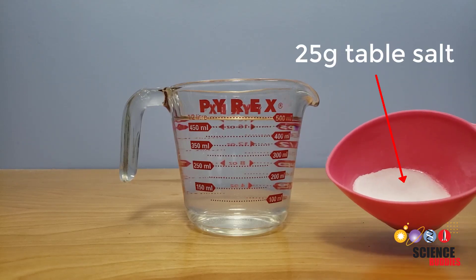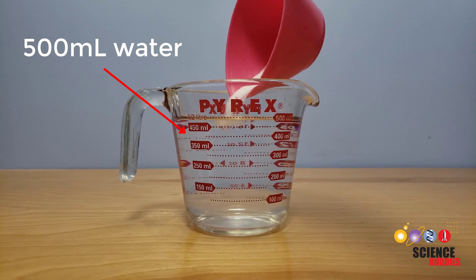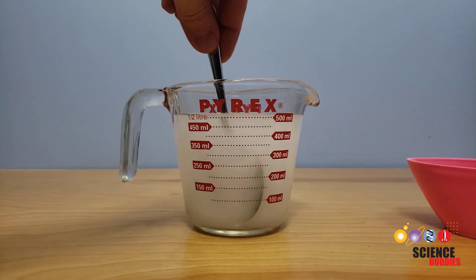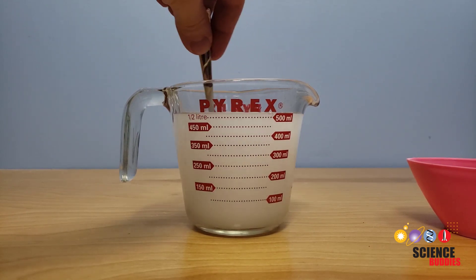Start by measuring 25 grams of table salt with a kitchen scale and add it to 500 milliliters of water. Mix thoroughly with a spoon. This will give you enough solution to make three batteries so you can do three different trials for your experiment.